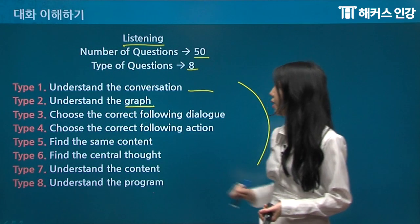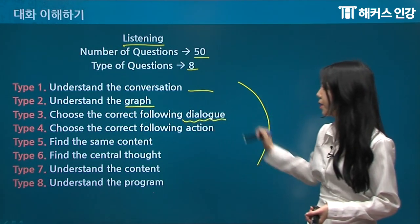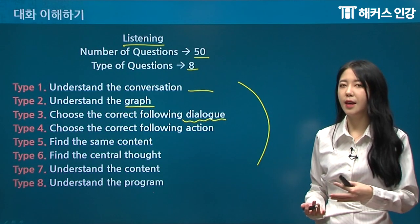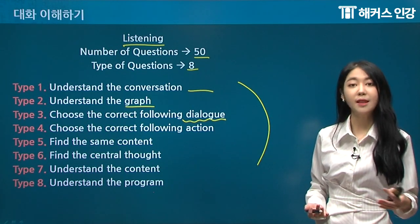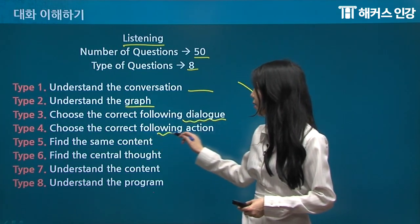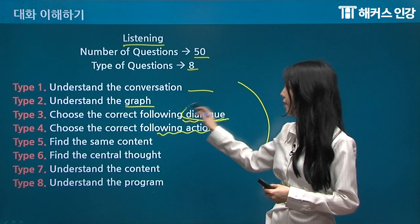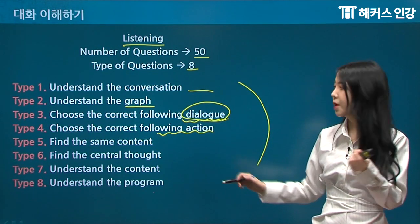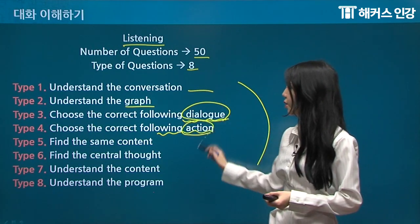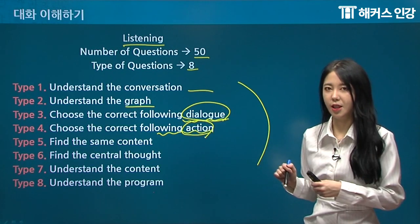Number three is choose the correct following dialogue — they give you a dialogue and you have to choose the correct content of what he or she is talking about. Next, type four is choose the correct following action — a little bit different: for type three you choose the next dialogue, but for type four you have to choose the right action, what he or she will do after that conversation.